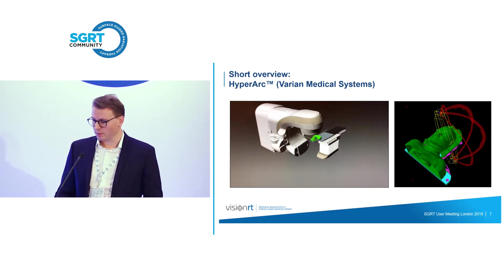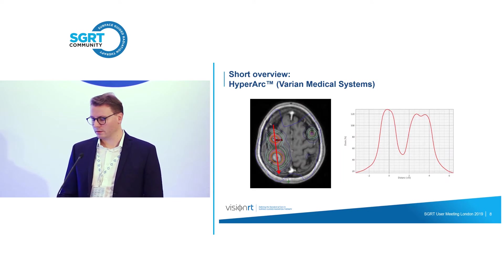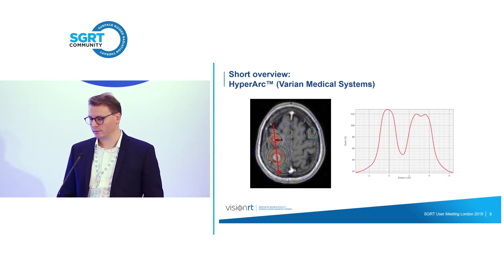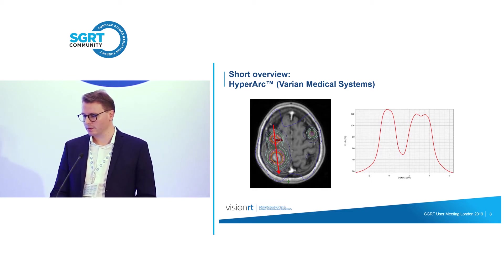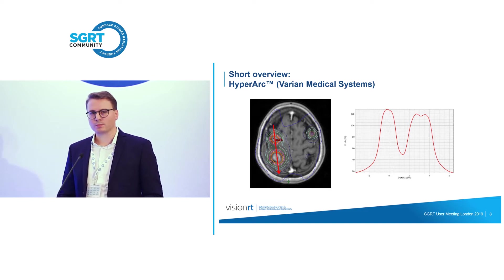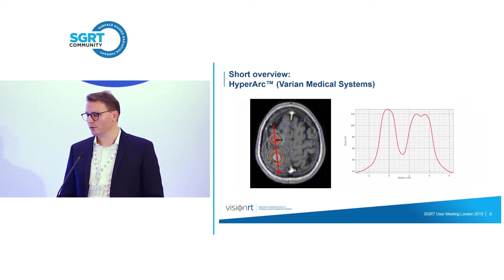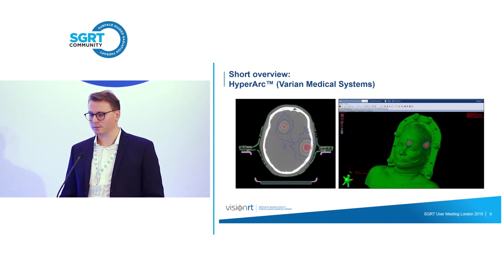I brought you a little video to show what happens. This is the full rotation that usually takes place at couch zero, then the couch starts moving on its own, and there are several semi-arcs at different couch angles up to a maximum rotation of 90, respectively 270 degrees. HyperArc also gives you excellent algorithms and optimizers for fantastic dose distributions — you can see here two quite adjacent metastases with practically no dose bridging effect between them. The dose drops to almost 50% on a very short scale.